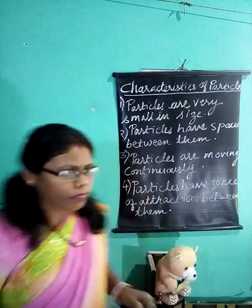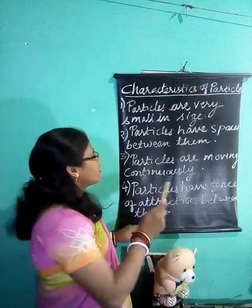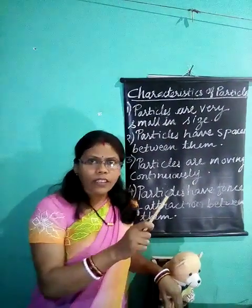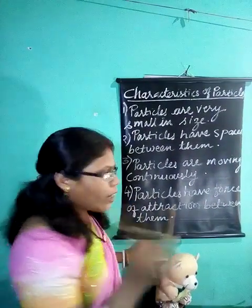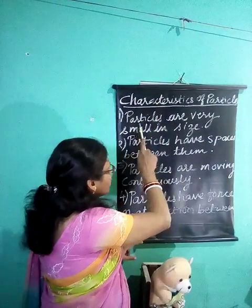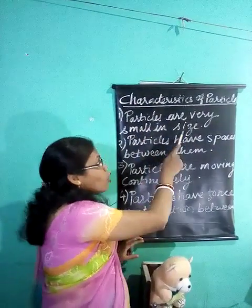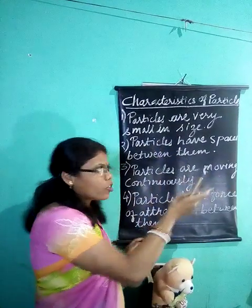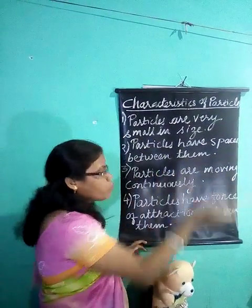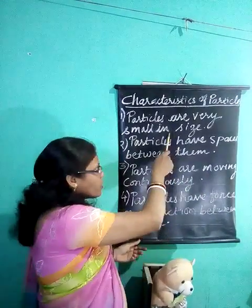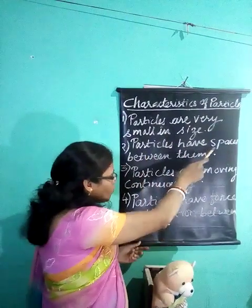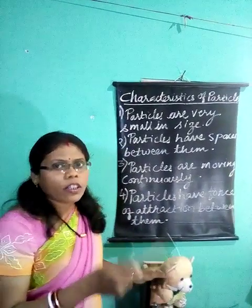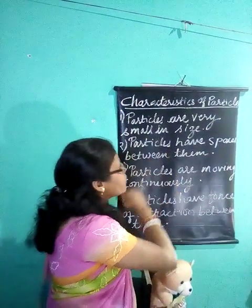Welcome children. In the previous class we saw that matter is made up of particles. The characteristics of particles we covered: first, particles are very small in size — we saw this with the activity where we put blue dye in water and observed particle size. Second, particles have spaces between them — both experiments conclude that particles have spaces between them and are very small in size.